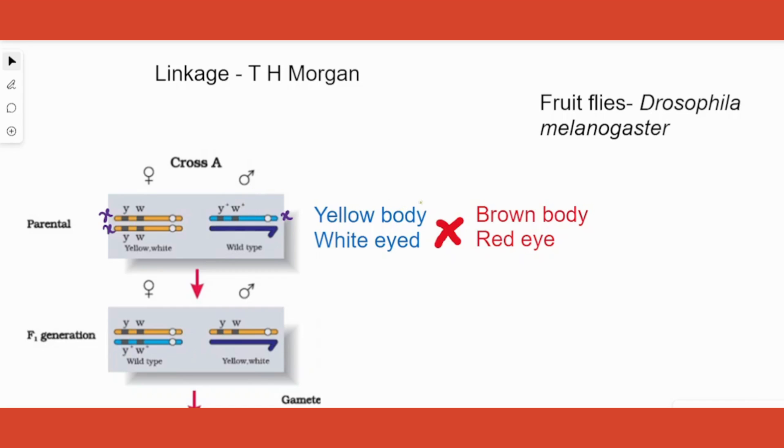One more thing to consider is the representation of genes. In Mendelian genetics, we used to represent the dominant character's first letter in capital form. In this case, the wild type is the dominant character - brown body and red eye. However, here we don't do that. Instead, we take the recessive trait's first letter - both cases Y and W - and use it as such for the recessive trait, and with a plus for the dominant trait. Brown body red eye is represented by Y+ and W+.